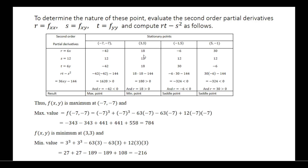At (−7, −7), the function has a maximum value. At (3, 3), rt minus s squared is greater than 0 and r is also greater than 0, so the function has a minimum. For (−1, 5) and (5, −1), rt minus s squared is less than 0, so the function has a saddle point at both. The maximum value at (−7, −7) is 784 and the minimum value at (3, 3) is minus 216.